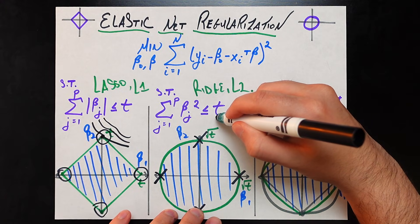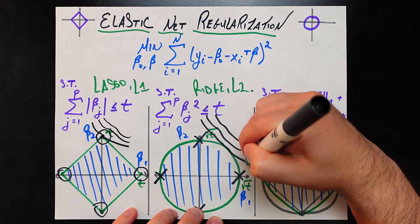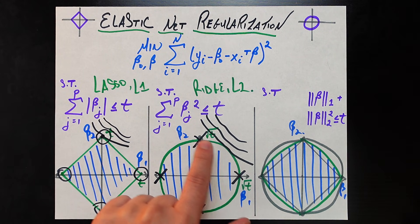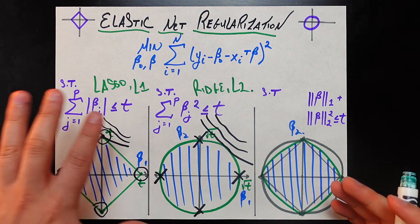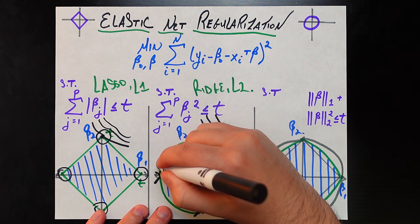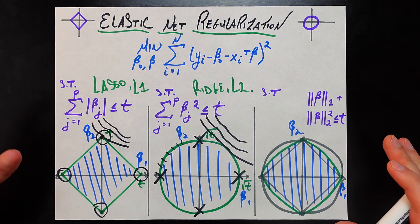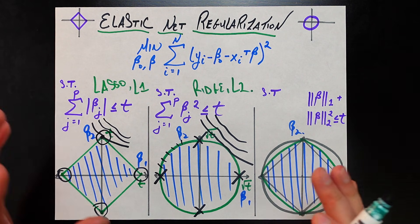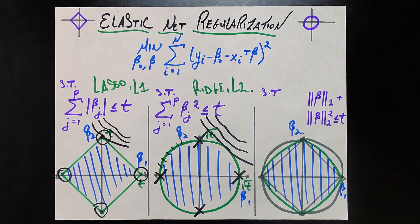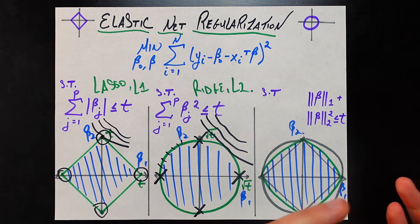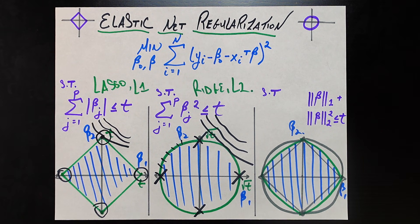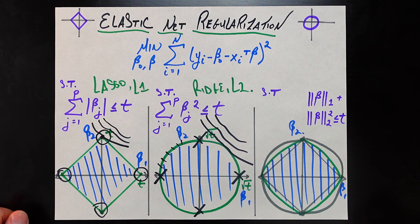The solution in ridge will almost never end up exactly at one of the corners because there are no harsh corners on the circle. The level curves of the loss function are very unlikely to hit any specific point on the circle; they will typically hit somewhere on the arc. Crucially, at all points on the arc, none of the beta coefficients will be exactly zero — they may be small but never exactly zero. So ridge does not give sparsity and does not help with feature selection the way lasso does, but it solves the collinearity problem lasso struggled with.